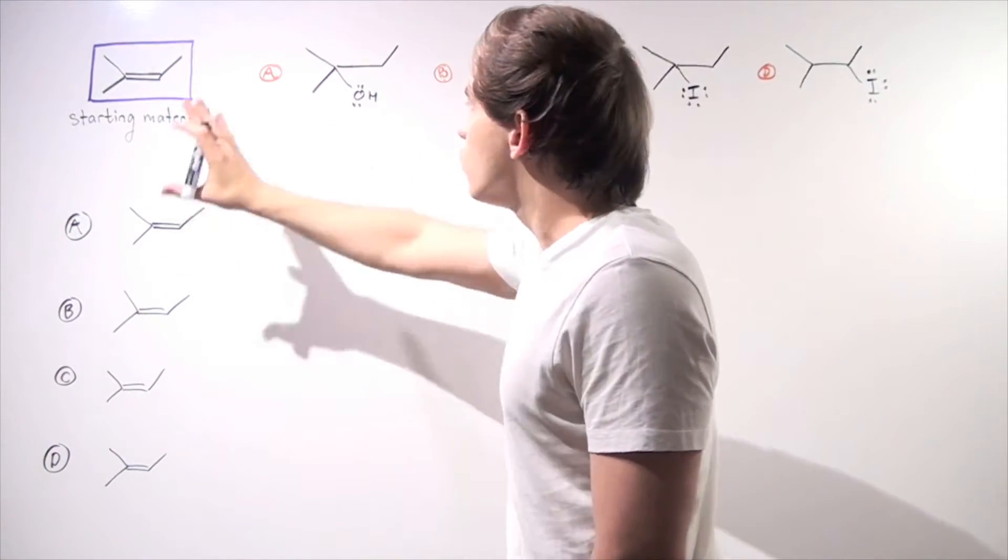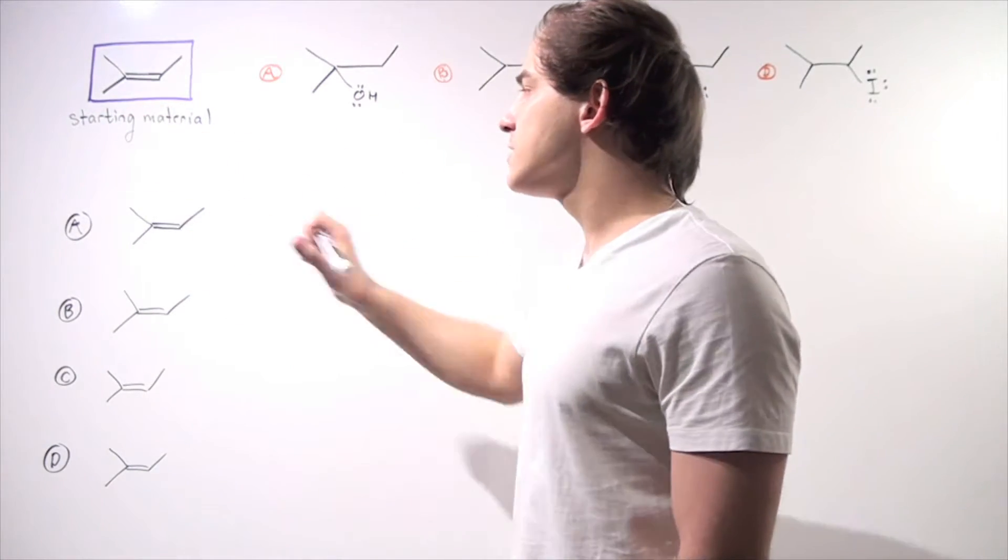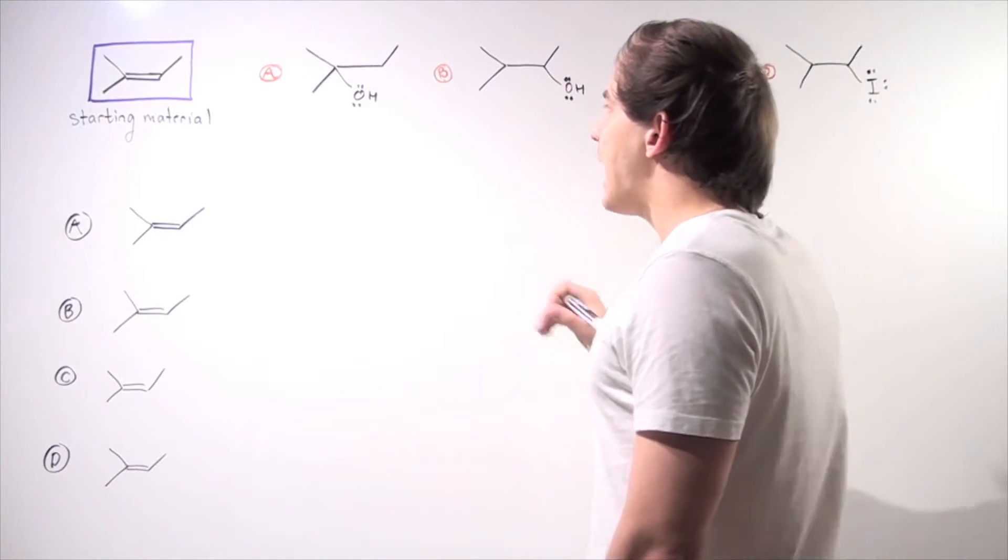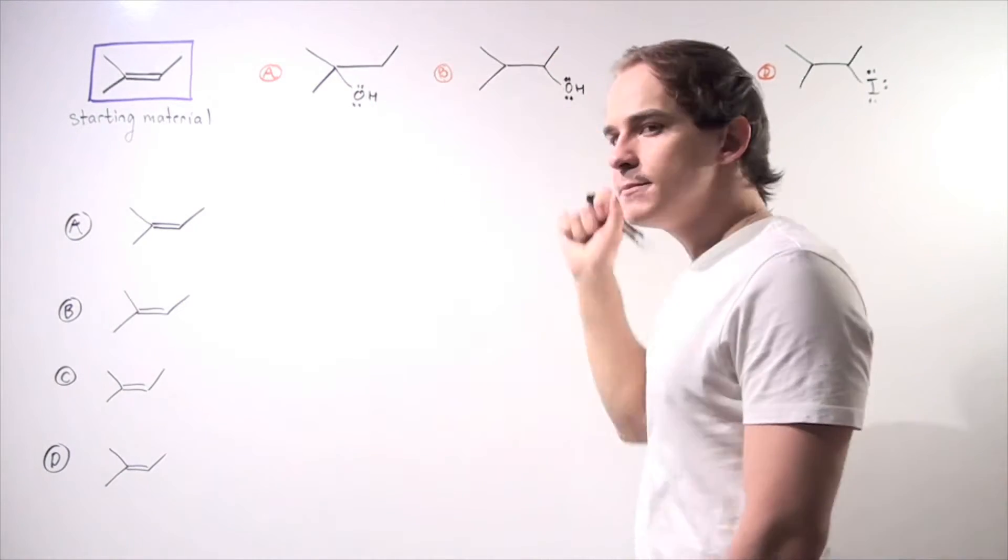So let's begin with our product A. We want to begin with the starting material, this asymmetrical alkene, and form the following product A. So let's examine product A. What is product A?